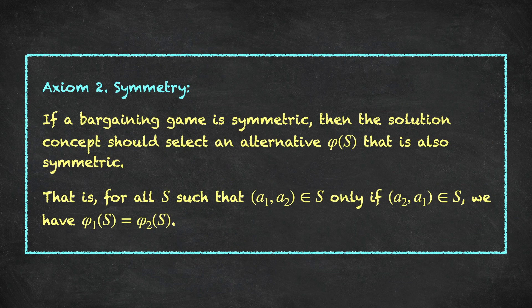The formal statement: Axiom 2, symmetry, says that if a bargaining game is symmetric — that is, for all bargaining games S such that (A1, A2) belongs to S only if (A2, A1) belongs to S as well — then the utility assigned to player 1 by the solution concept, phi-1 of S, is equal to the utility assigned to player 2, phi-2 of S.